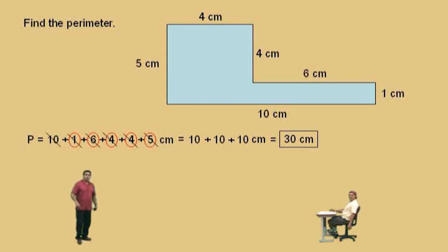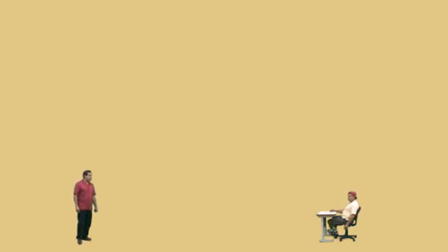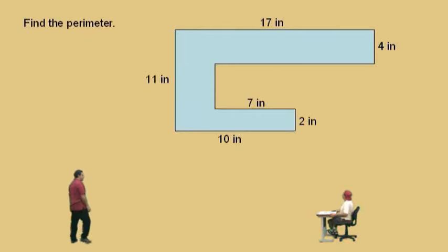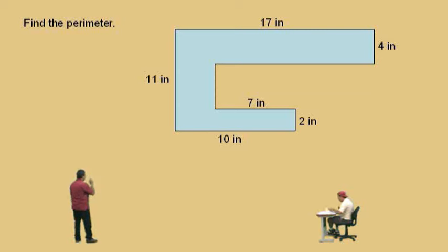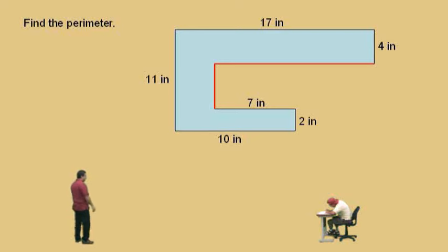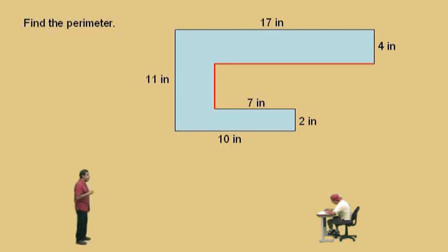That was a good warm-up problem. Now we'll go to a tougher one. Find the perimeter of this one, Charlie — don't get scared. We're going to do the same thing as we did last time. We're going to find our two missing lengths. We have to find that horizontal length there and that vertical length. Those are the two missing lengths we've got to find. Our dimensions are in inches this time.